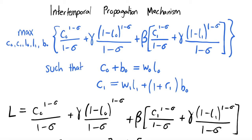Hi, so in the previous video we looked at a static propagation mechanism, looking at intratemporal labour and leisure choices and choices about consumption. Now in this one we're going to look at intertemporal propagation mechanisms — mechanisms that arise over different periods where we're substituting our choices, deciding to consume different amounts in periods zero and one, where period zero is our current period.